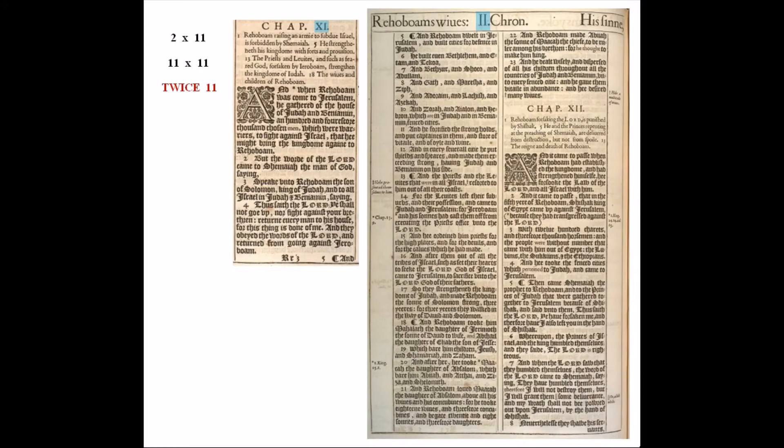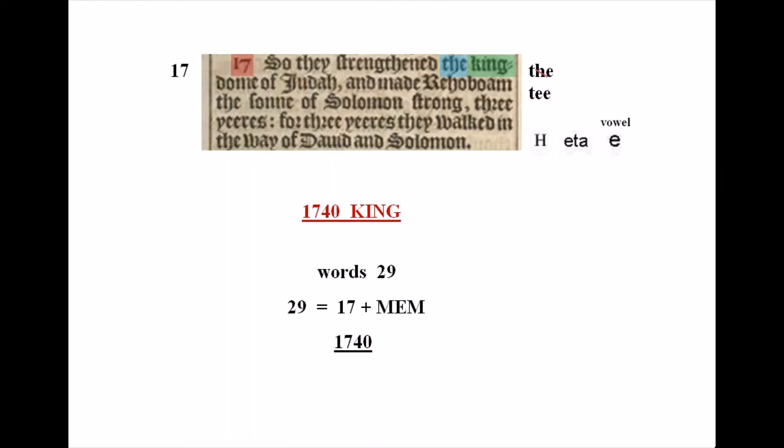Now we're looking at 2 Chronicles, chapter 11 — again, twice eleven. Just like before, check verse 17. After four words there's the word 'the.' H is eta in classical Greek, used for the long vowel E, so 'the' becomes T. The word after it is 'king,' so it reads 17, 4, T, king. There are 29 words total; 29 equals 17 plus mem, or 17-40. And 29 is 2 plus 9, equaling 11.